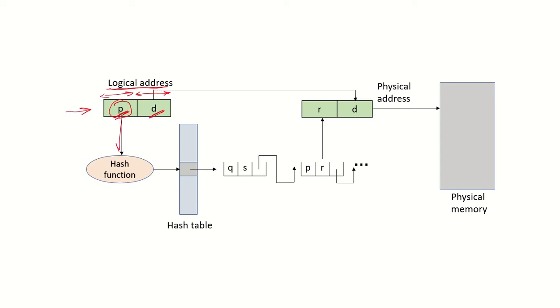This page number value is used with a hash function to hash into the table. This hash table will have a chain containing many such elements. Many logical addresses would hash into the same location, so for all those page numbers hashing into the same location,